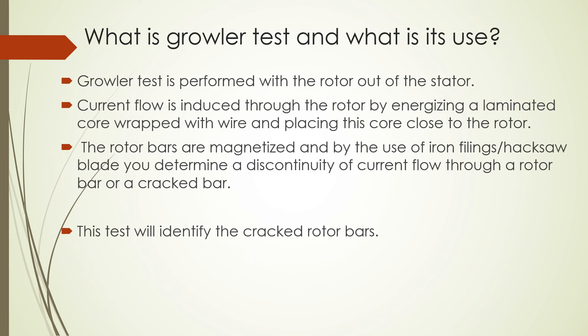The tenth question: what is the growler test and what issues does it identify? The growler test is performed on the rotor out of the stator. Current flow is induced through the rotor by energizing a laminated core wrapped with wire and placing this core close to the rotor. The rotor bars are magnetized and, using iron filings or a hacksaw blade, you can determine the discontinuity of current flow through the rotor bars or identify a cracked bar. This test identifies cracked rotor bars.